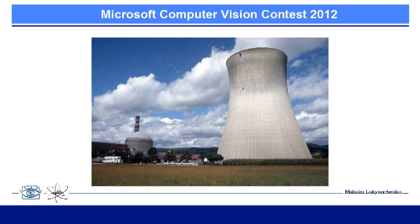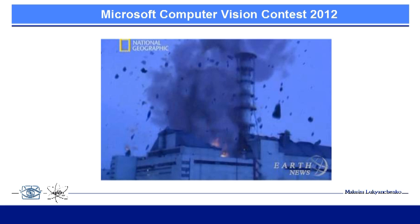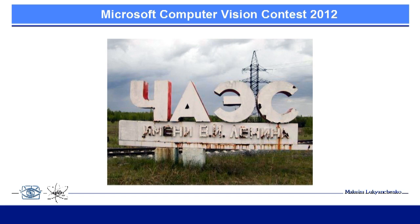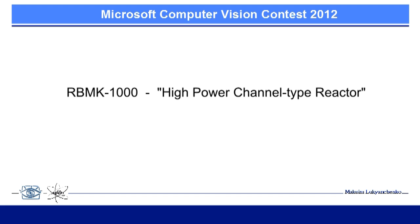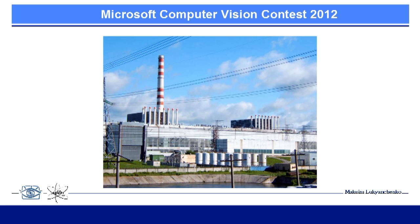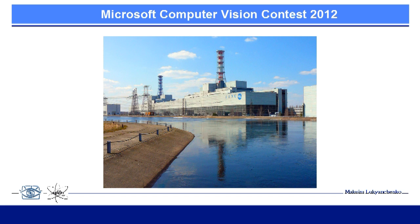Nuclear power is controversial. It has its supporters and opponents. But at the moment, 20% of energy in the East is produced by nuclear power plants. Nuclear power is relatively safe if you follow safety precautions. The case of violation — the scale of disaster is enormous. Nuclear reactor RBMK-1000, which means high power channel type reactor, is operating in Russia at 3 nuclear power plants: 11 reactors — Leningradsky, Kursky, and Smolensky nuclear power plants.